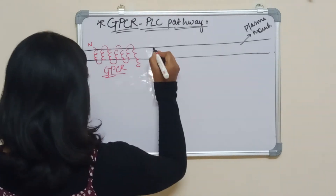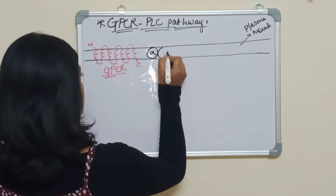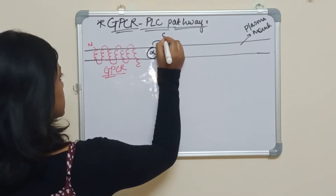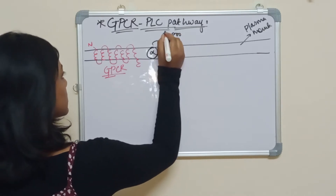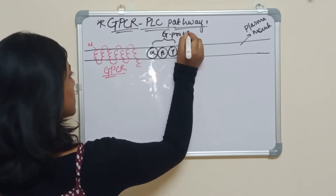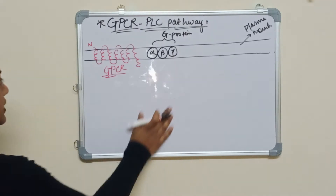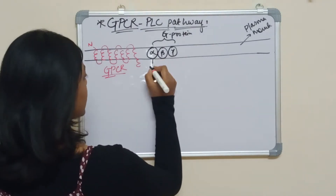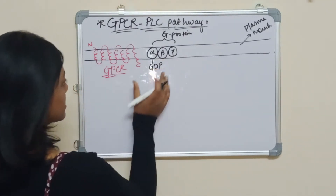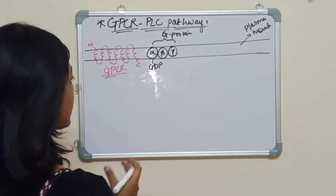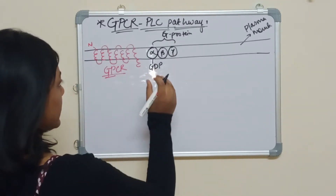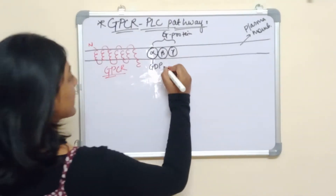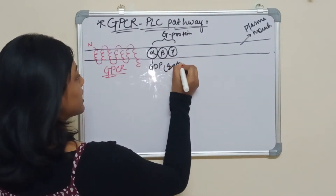Here is the G protein — the trimeric G protein. G protein has three subunits: alpha, beta, and gamma. Initially, the alpha subunit of G protein is bound to GDP, which means it is in inactive form.